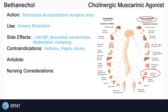Another contraindication is with clients who have peptic ulcers, due to bethanachol's increase in gastric acid secretions — an increase in gastric acid would irritate those peptic ulcers. Bethanachol is also contraindicated in clients with gastrointestinal and bladder obstructions, as increasing GI and urinary motility during an obstruction may put the client at greater risk of complications like bladder rupture. Hypotension and bradycardia are also contraindications of bethanachol.